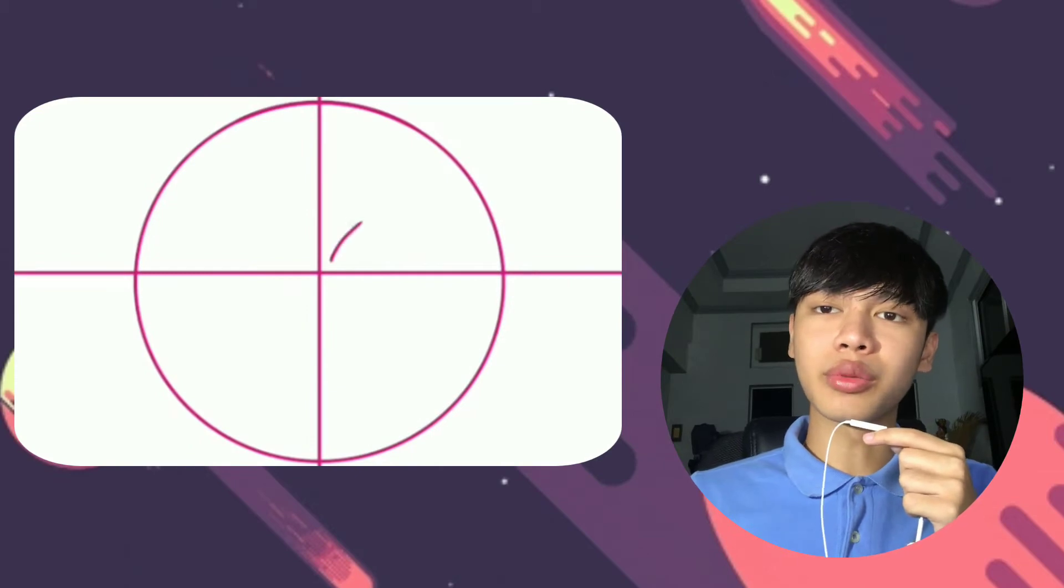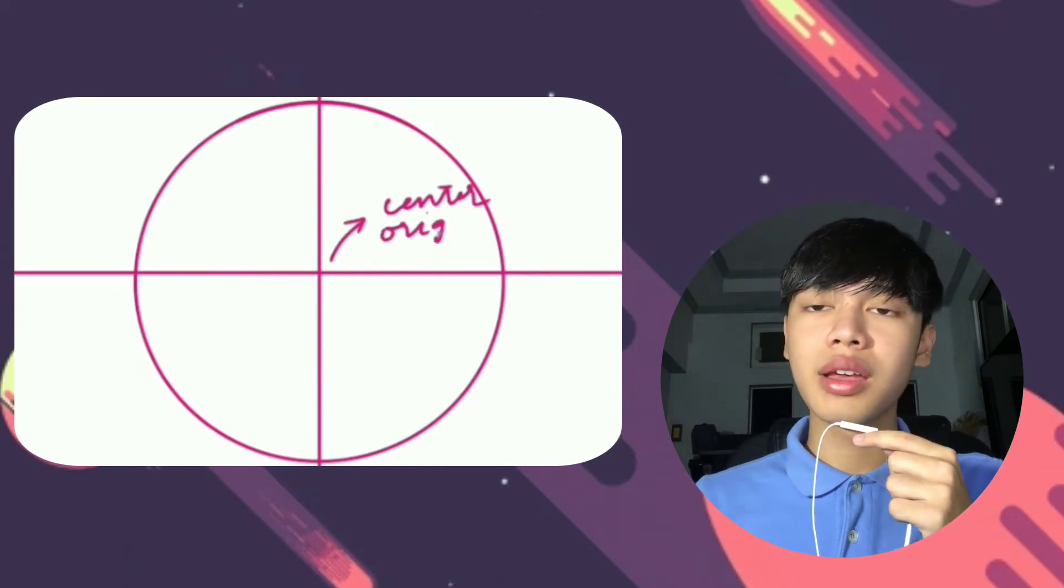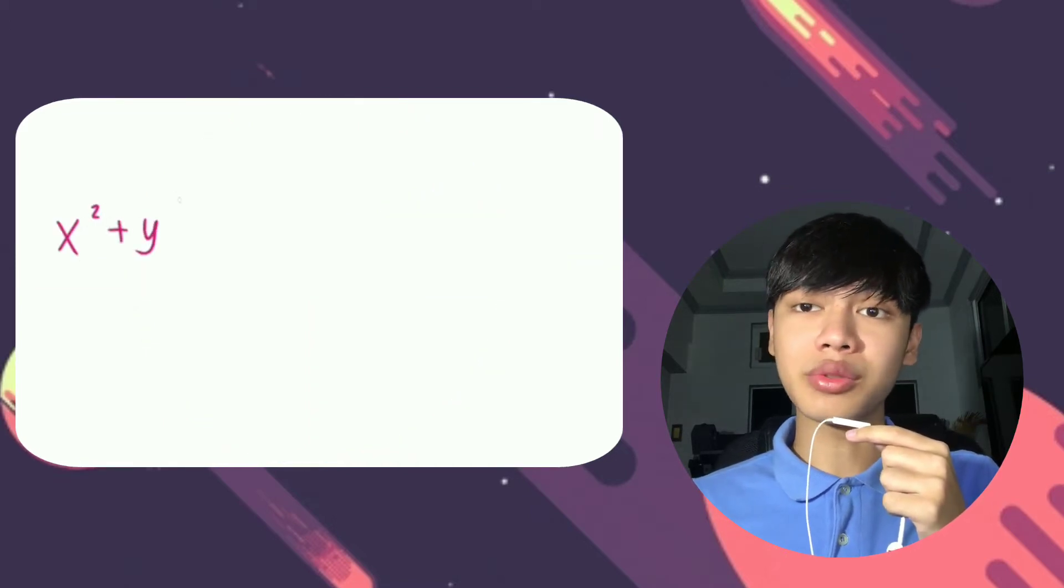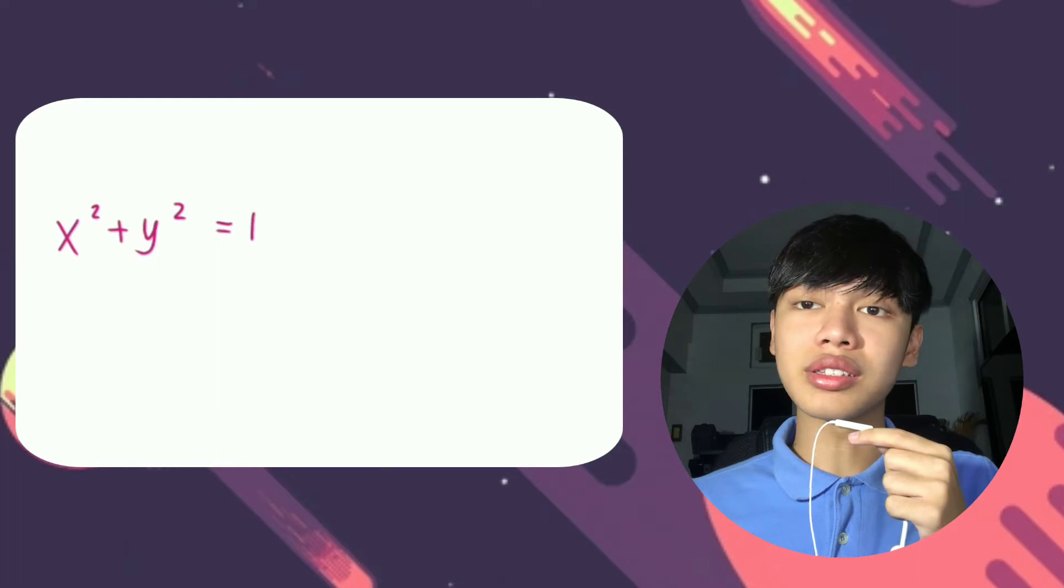The unit circle is a circle with its center at the origin of the coordinate plane and with a radius of one unit. Any circle with its center at the origin has the equation x² + y² = r², where r is the radius of the circle.